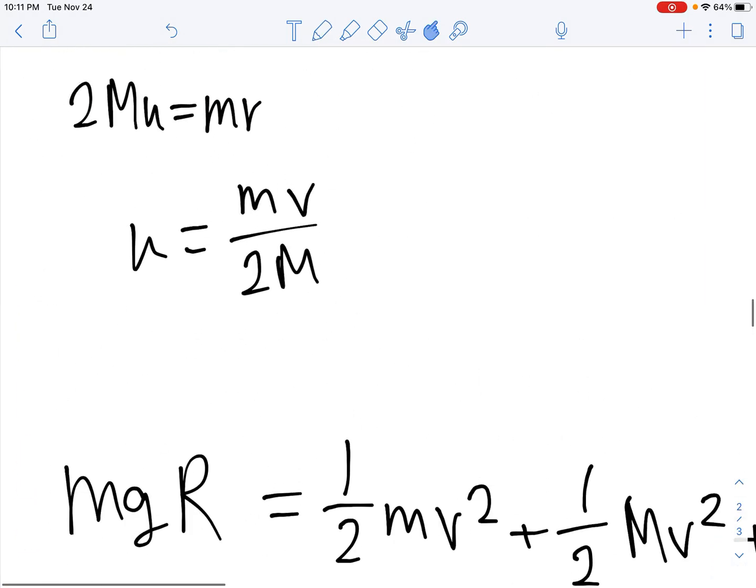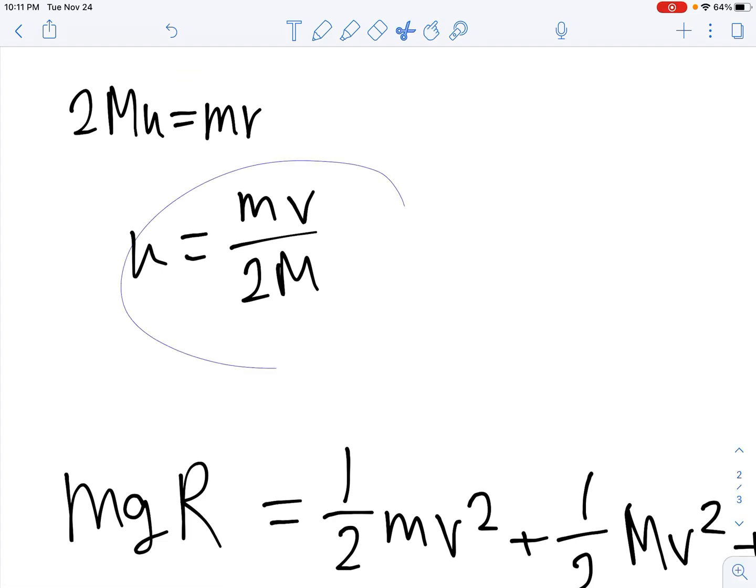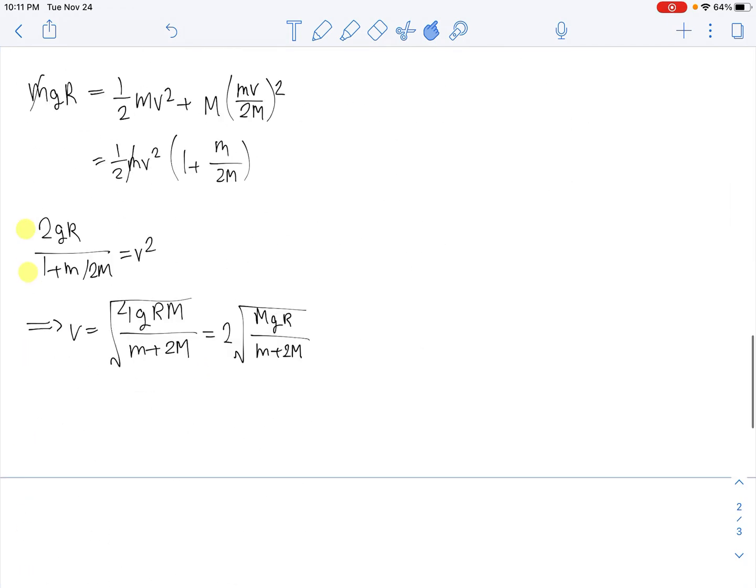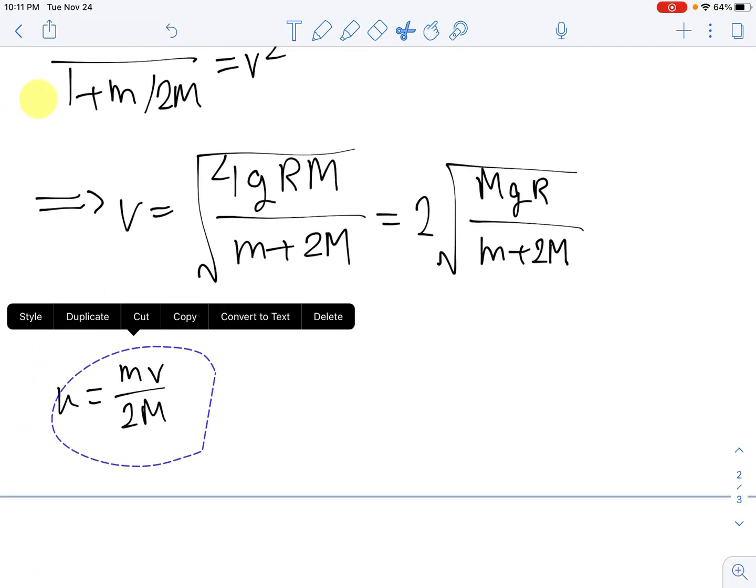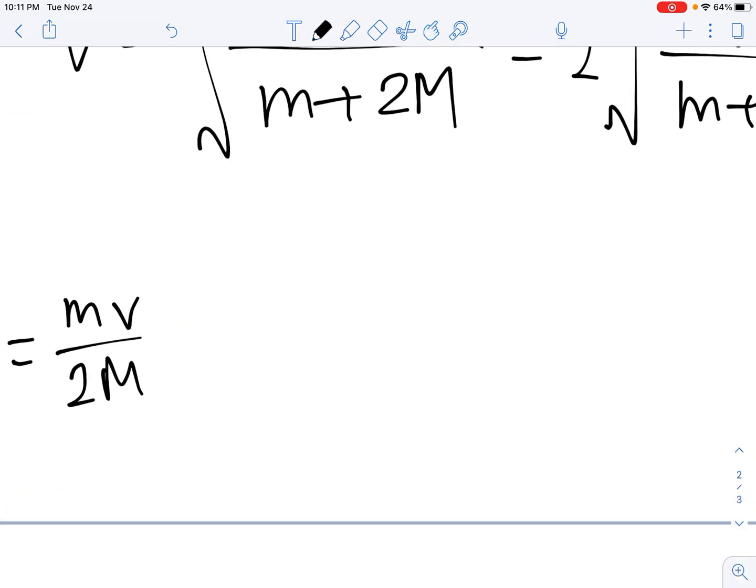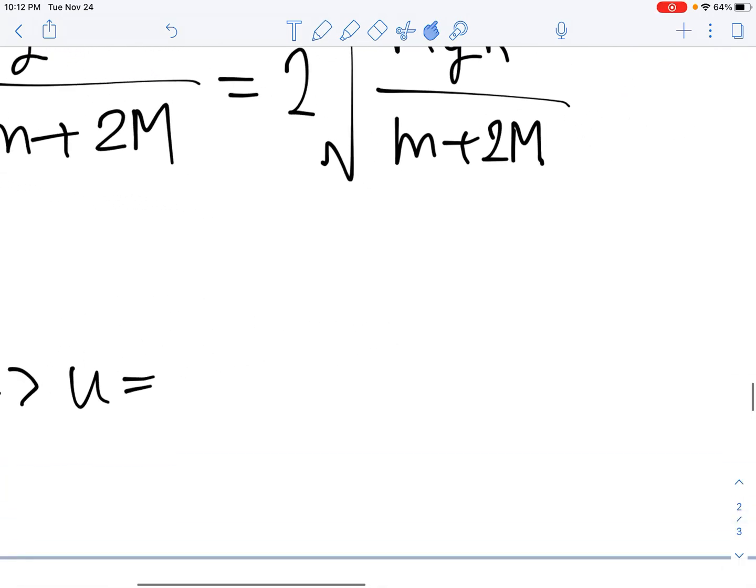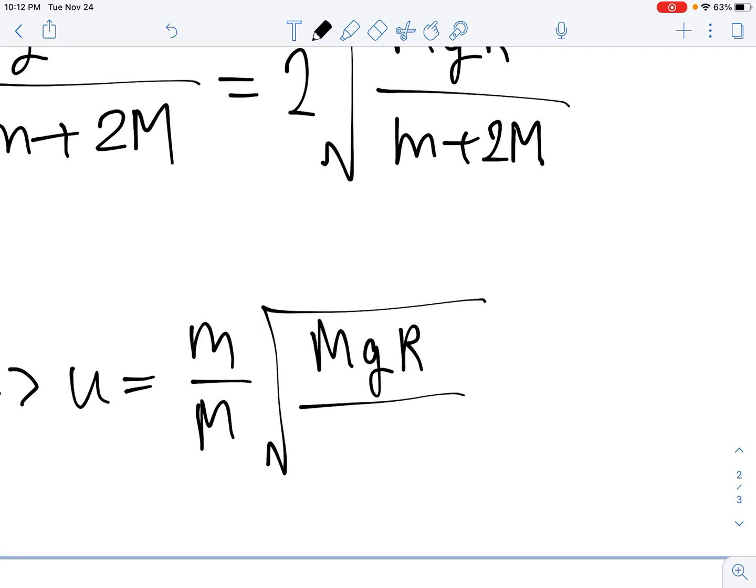So note that we have that u equals mv over 2M. Because of this, that means that u equals m over M times the square root of gRM over m plus 2M. So we have the velocity v and the velocity u of the cylinder when it reaches the very bottom.